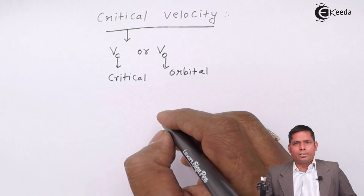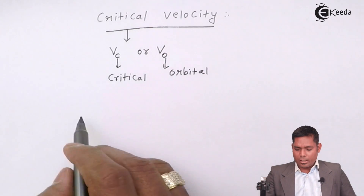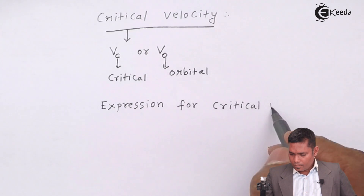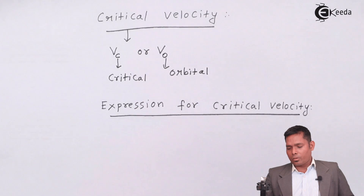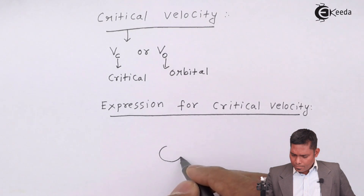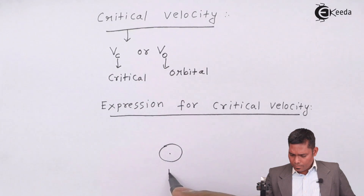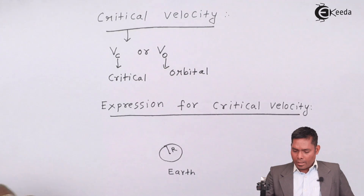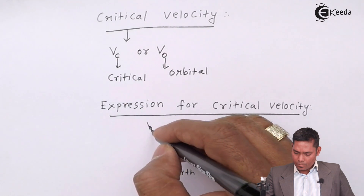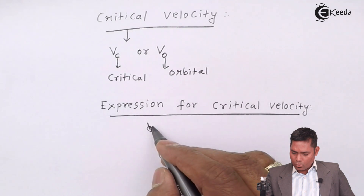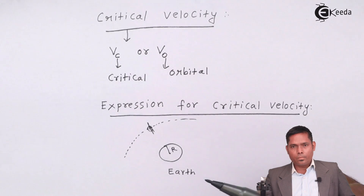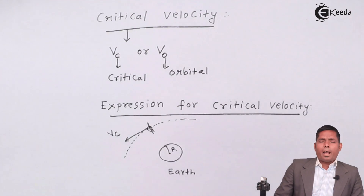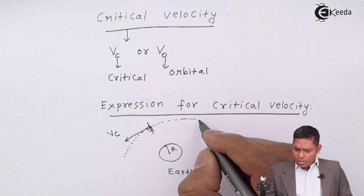Now, how do we determine that critical velocity? Let us consider a planet — Earth — whose radius is R, and I have a satellite above it. This satellite has to revolve around this planet, so I must provide a certain velocity. That velocity is known as the critical velocity. If I provide a velocity equal to critical velocity, then it will have circular motion.